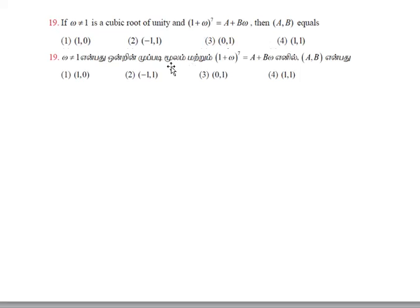So 1 + ω to the power 7 equals A + Bω. Now A, B is there. If we have a cube root of unity, we can use the results. The first result is the cube root of unity: ω³ = 1. Another result is 1 + ω + ω² = 0. The sum of the cube roots of unity equals 0.